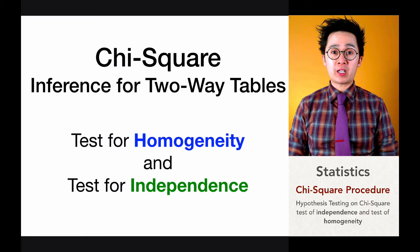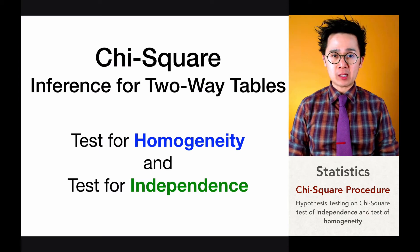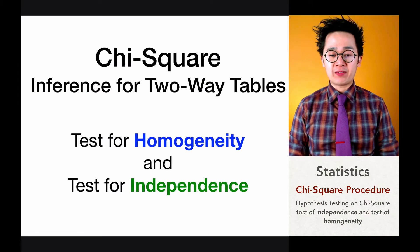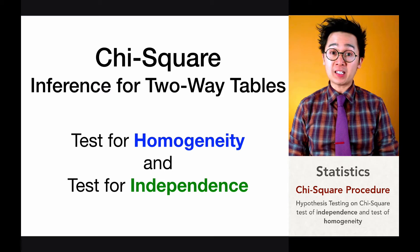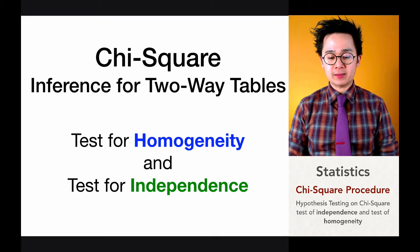Today we're going to be working on a chi-square test given by a two-way table, and this time the case we're going to be working on will be the test for independence.